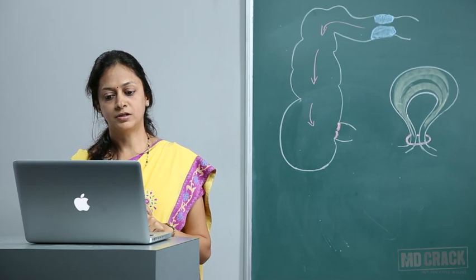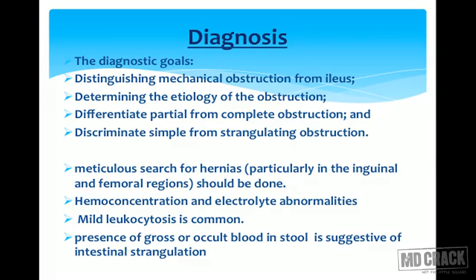The diagnostic goals are to distinguish mechanical obstruction from ileus, determine the etiology, differentiate partial from complete obstruction, and discriminate simple from strangulating obstruction. On examination, a meticulous search for hernias, particularly inguinal and femoral hernia, should be done. On lab investigation, hemoconcentration and electrolyte abnormalities will be seen due to vomiting. Mild leukocytosis is common, and the presence of gross or occult blood in stool is suggestive of intestinal strangulation.